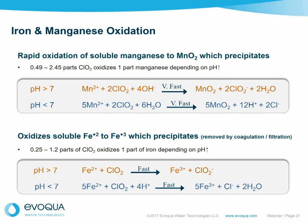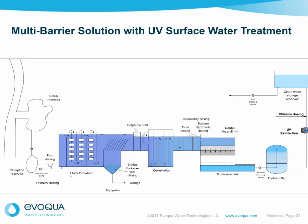Another example of a multibarrier approach: from a lake or river source, through a safety reservoir or receiving water reservoir, there might be a ferric dose and initial chlorine dioxide injection, then flocculation, possibly ozone, more ferric, and GAC is used increasingly. Then through the UV phase, and then chlorine goes in after the UV. It is very important to get the sequencing right — chlorine goes in after UV, not before, because the UV will effectively remove the chlorine. So the sequence of the process is very important.